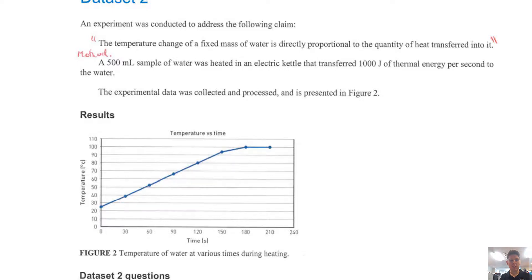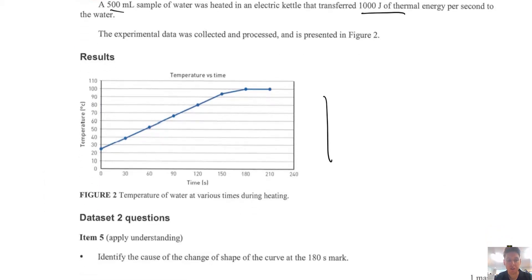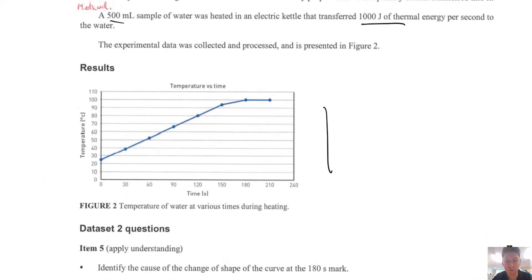So this is data set part two on the data test. From the information we have this graph, we have some numbers. The first question says identify the cause of change of shape of the curve at the 180 second mark.